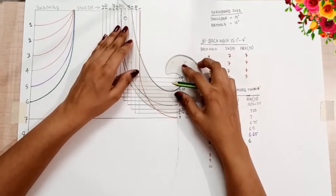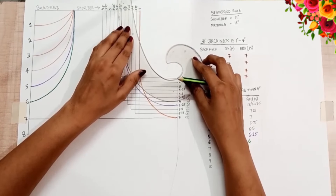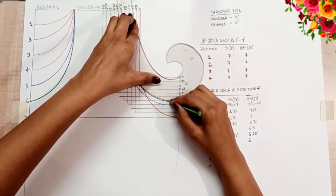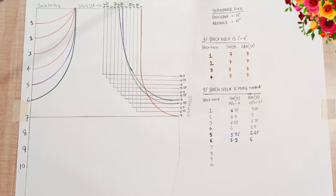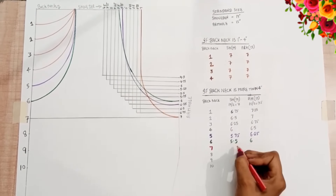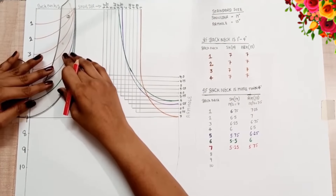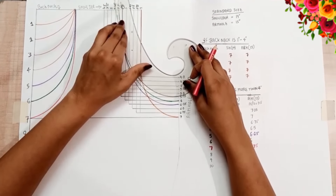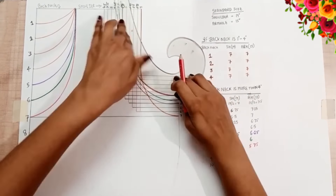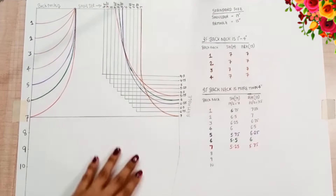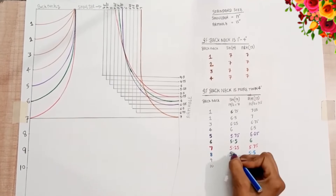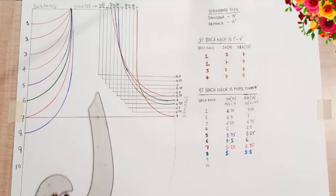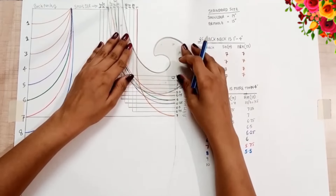Then we will take the shoulder and armhole into that. We will take the shoulder and armhole to the top at 6.25. We will also do this again because at the top, under each 1 inch, the shoulder and armhole will decrease by 0.25. I have done all the markings in color so that you can understand. This is how our drafting is completed.